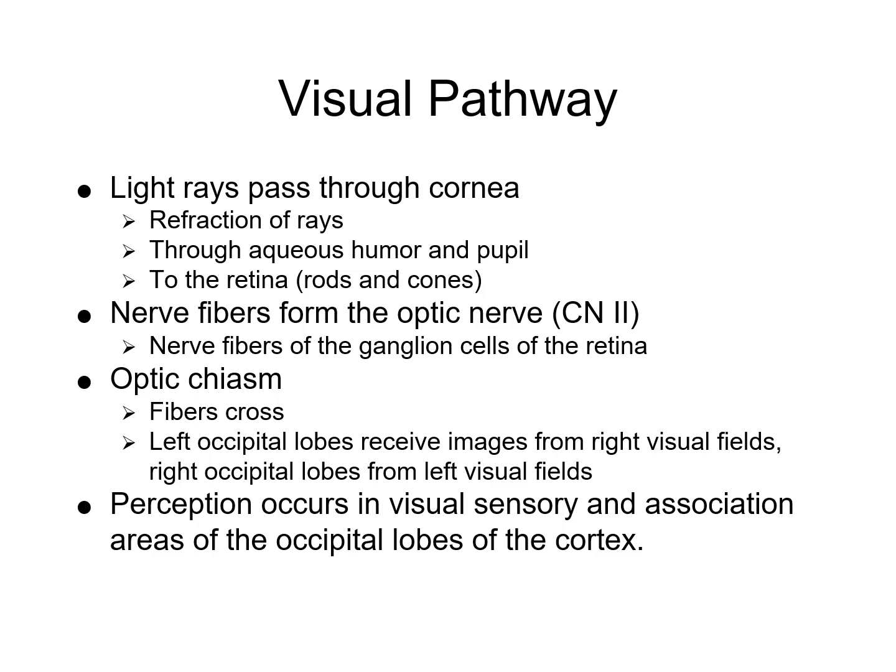Light rays from an object pass through the cornea and are refracted through the aqueous humor and pupil. The curvature of the lens adjusts to refract the light rays so they converge on the retina to provide a sharp image. Light continues through the transparent aqueous humor to the retina, where the photoreceptor neurons — the rods and cones — are stimulated. Light energy is converted into an electrical stimulus, which is transmitted by the optic nerve to the occipital lobe of the brain, where the image is identified and integrated with other information.